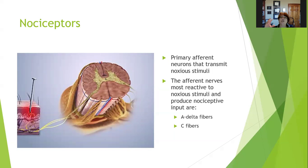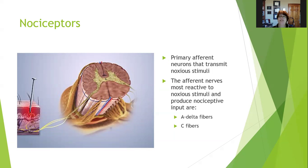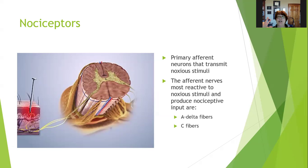Nociceptors are a subcategory of peripheral nerves — they are primary afferent neurons whose job is to transmit noxious stimuli. Some other peripheral nerves transmit light touch, pressure, and stretching, but nociceptors specifically encode noxious stimuli. The afferent nerves most reactive to noxious stimuli and that produce nociceptive input are A Delta fibers and C fibers. Other sensations like light touch and pressure are encoded by A Beta fibers. The primary nociceptors are A Delta and C fibers.